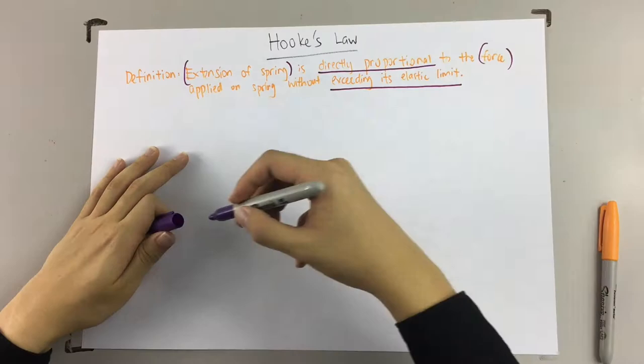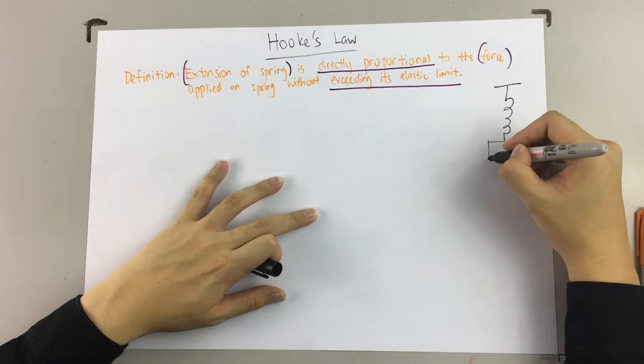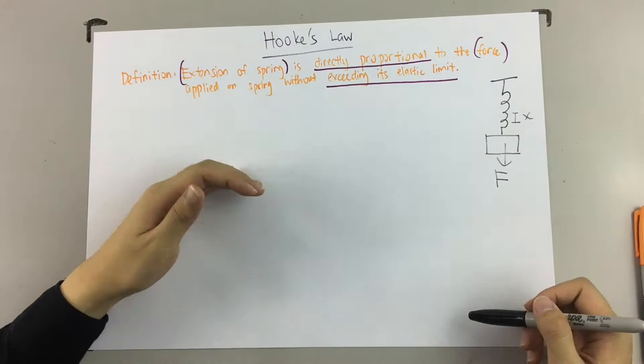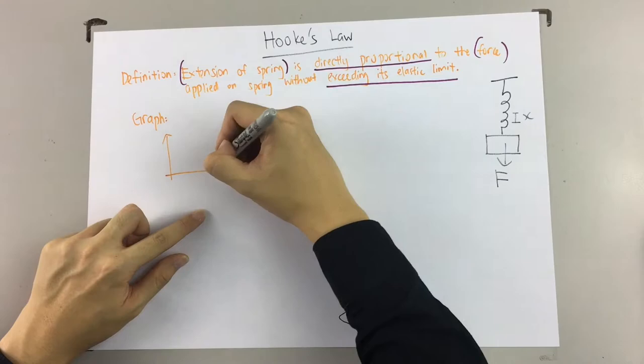Let's check the diagram to help you understand better. As you can see, there is a spring and it's holding an object. The object has a force acting on it, and x is the extension, f is the force.